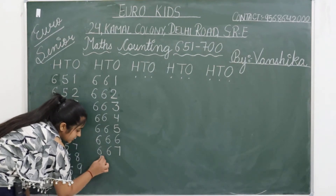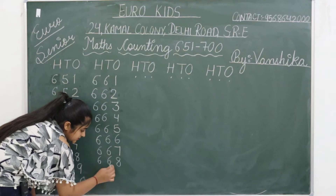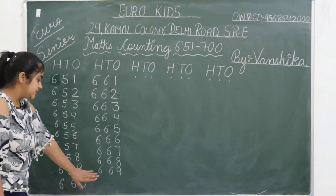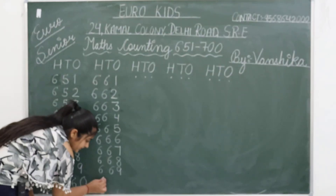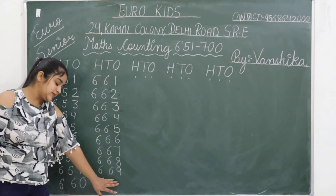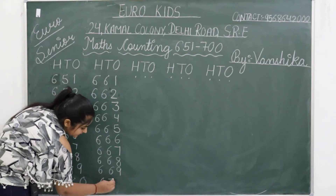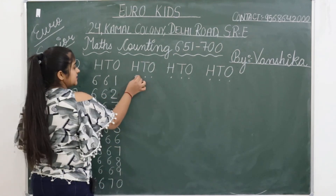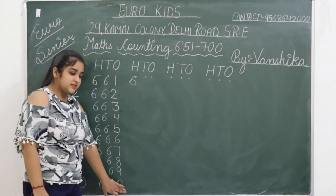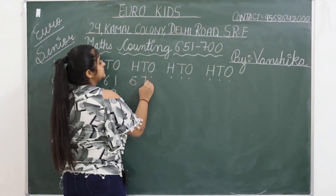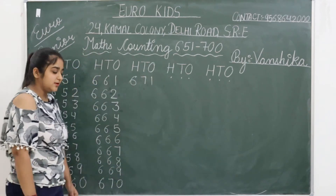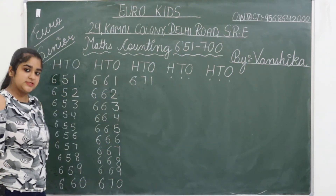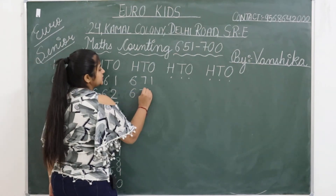667. 668. 669. And now what comes? The 6 stays as it is in the hundreds place. After 69 comes 70 — so we get 670. And what comes next? 671. The biggest confusion is what comes at the end of a line and where the next line starts. Okay? 672.